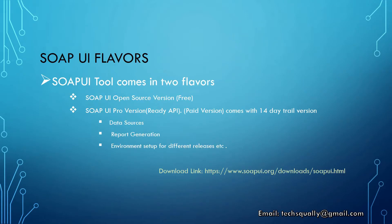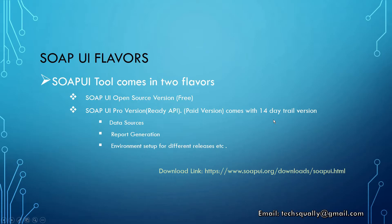Now we will discuss about the SOAPUI flavors. SOAPUI tool comes in two flavors in the market. One is the SOAPUI open source version that you can download from the SOAPUI website. The link is given below in the slide and you can use it free of cost for lifetime. The other is the SOAPUI Pro version — it is a paid version that you can use for free for 14 days, after which you have to pay some dollars per month.